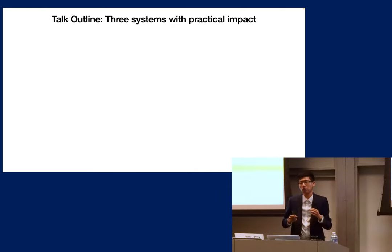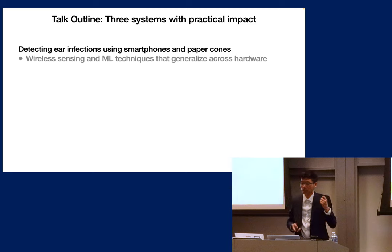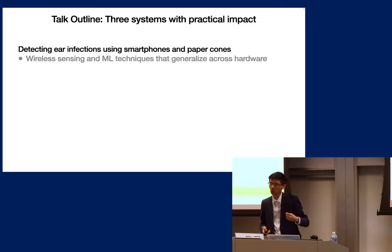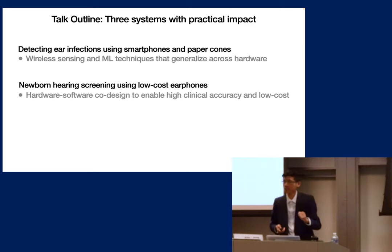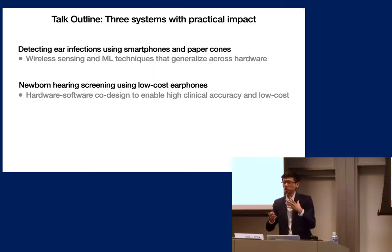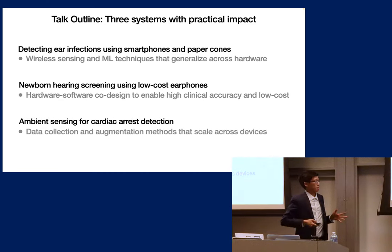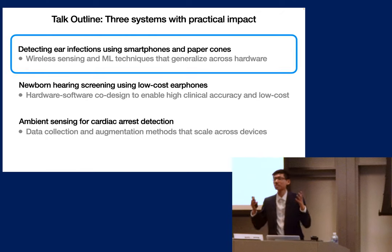Today I'll focus on three systems with the most practical impact: first, detecting ear infections using a smartphone and a simple paper cone, demonstrating wireless sensing techniques to scale across devices; second, using low-cost earphones to screen for newborn hearing loss, demonstrating hardware-software co-design for high clinical accuracy; and third, an ambient sensing system leveraging smart speakers like Alexa to detect cardiac arrests.